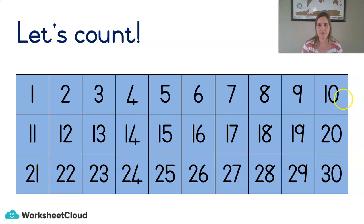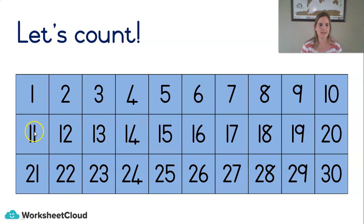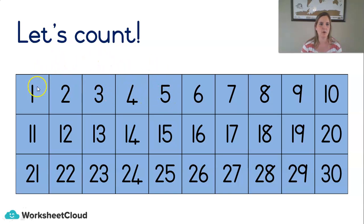Let's count backwards. Let's start at 20 and count backwards in ones. 20, 19, 18, 17, 16, 15, 14, 13, 12, 11, 10, 9, 8, 7, 6, 5, 4, 3, 2, 1, blast off! That's what my Grade 1s always say at the end.